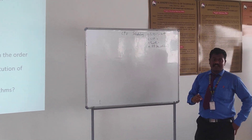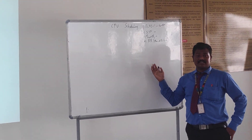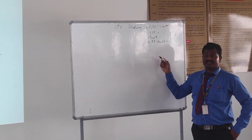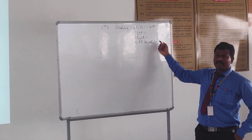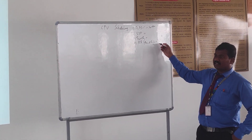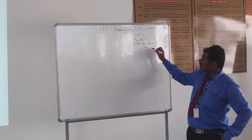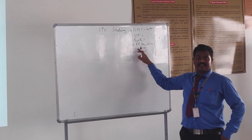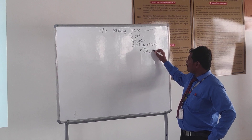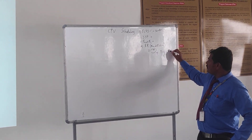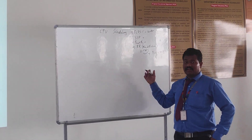The third scheduling algorithm is Priority scheduling, where a priority is assigned to each process and they are scheduled accordingly. The fourth one is Round Robin. Round Robin is nothing but FCFS in a circular manner. In this scheduling algorithm, we define a time quantum, and accordingly we switch from one process to another.